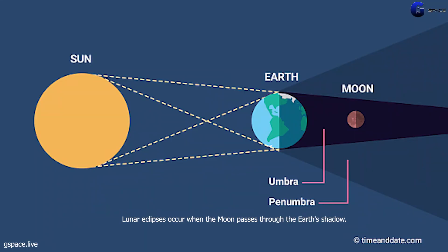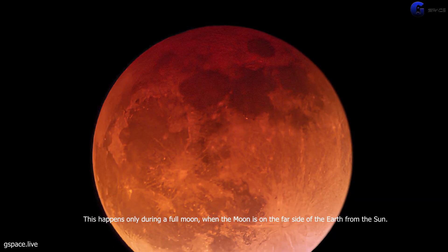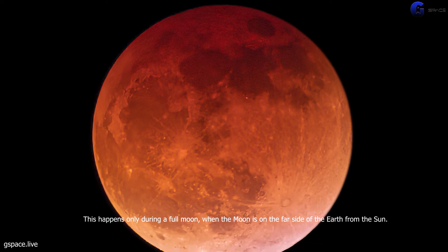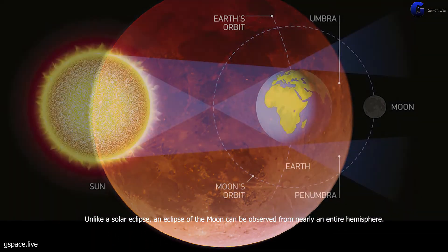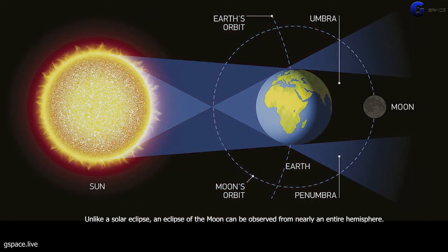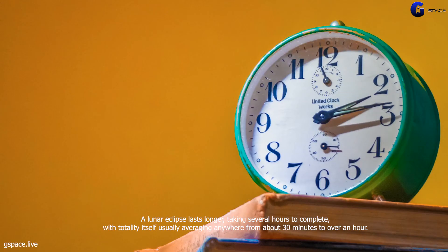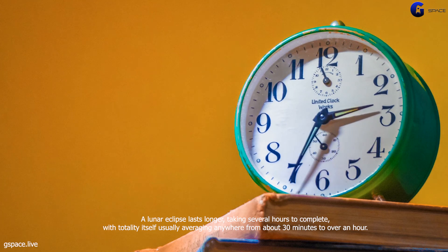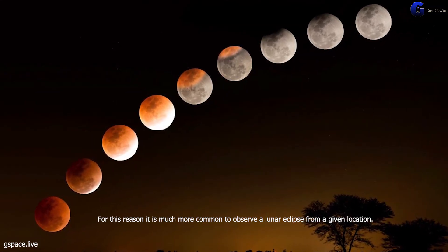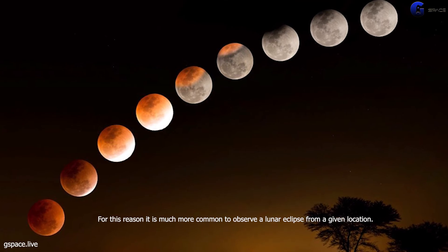Lunar eclipse. Lunar eclipses occur when the moon passes through the earth's shadow. This happens only during a full moon, when the moon is on the far side of the earth from the sun. Unlike a solar eclipse, an eclipse of the moon can be observed from nearly an entire hemisphere. A lunar eclipse lasts longer, taking several hours to complete, with totality itself usually averaging anywhere from about 30 minutes to over an hour. For this reason it is much more common to observe a lunar eclipse from a given location.